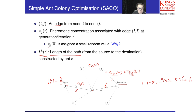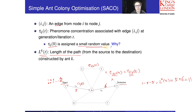In the beginning, we are going to initialize the pheromone concentration of each path with a small random value. We need to think about why we need to initialize it as a small random value rather than zero.